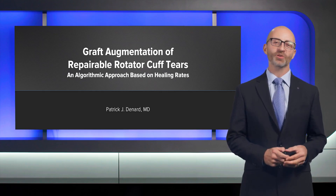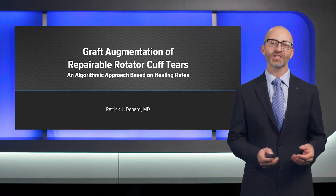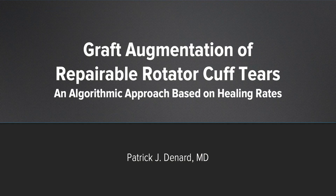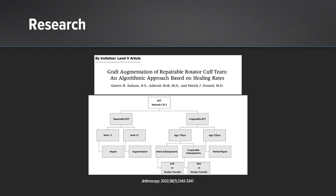I'm Patrick Denard from Med for Oregon. I want to share with you my algorithm for graft augmentation of repairable rotator cuff tears and give you a little explanation of why and when I will use dermal allograft augmentation. We have previously summarized this in a paper published in the Arthroscopy Journal entitled 'Graft Augmentation of Repairable Rotator Cuff Tears,' where we outline an algorithmic approach. We can use the rotator cuff healing index to predict healing preoperatively, with a cutoff of seven points.